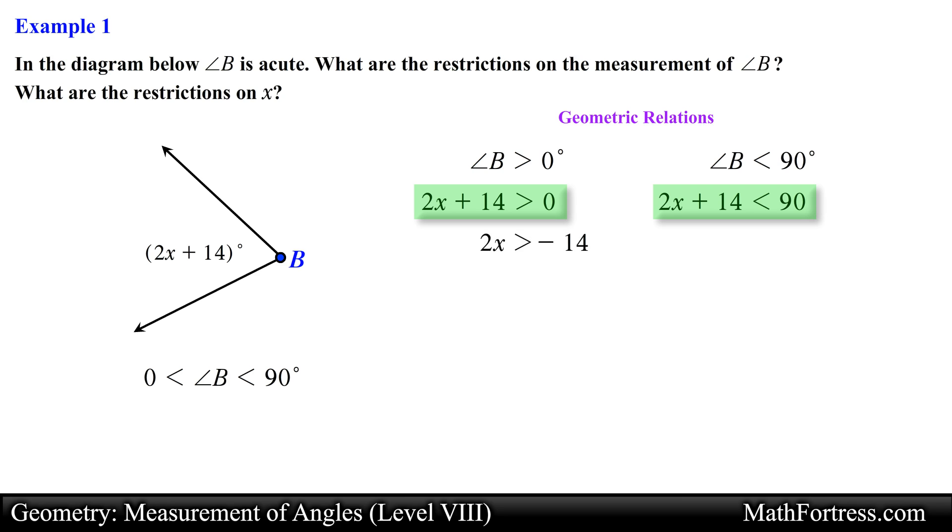Now it is just a matter of solving for x. The method for solving inequalities is essentially the same as the method for solving equations. The only difference is that you have to make sure you flip the inequality symbol when you divide or multiply by a negative number. Solving for x we obtain x is greater than negative 7 and x is less than 38, so the value of x has to be a number between negative 7 and 38 in order for this angle to be acute.